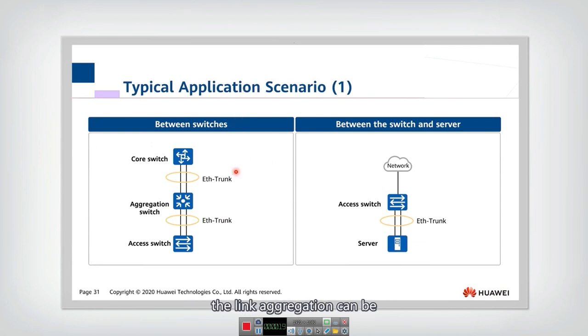You can see that link aggregation can be applied between switches. If there are access switch and aggregation switch to provide more redundancy, there are multiple physical links. Then we can use the Ether trunk to aggregate them together to form one logical link. Similarly, the Ether trunk can be used between the aggregation switch and the core switch.